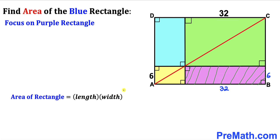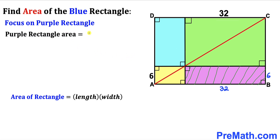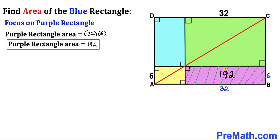Now let's focus on the purple rectangle. Recall the rectangle area formula: area equals length times width. For this purple rectangle, the length is 32 and the width is 6, so the purple rectangle area is 32 times 6, which equals 192 square units.